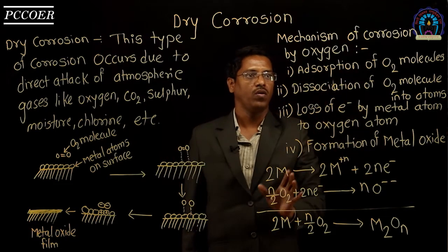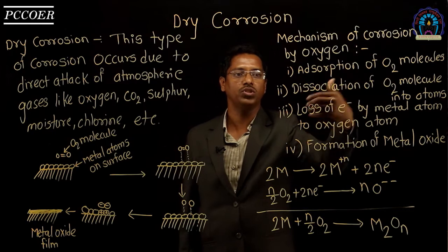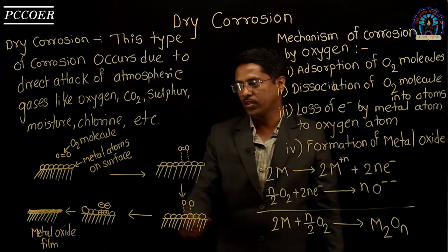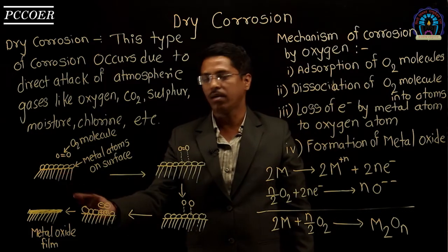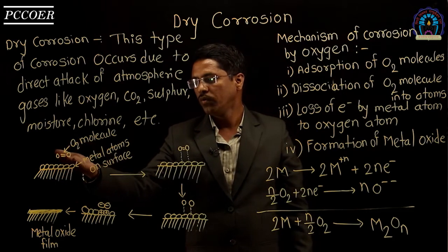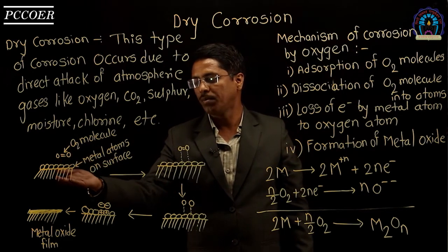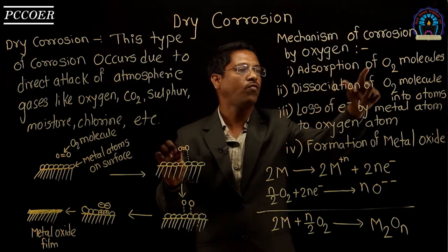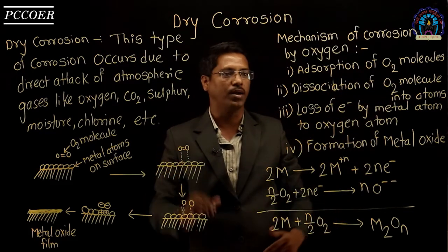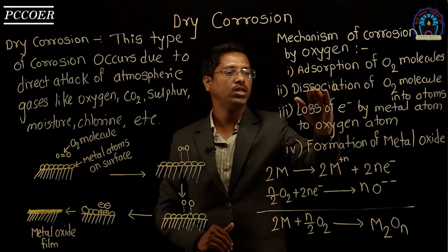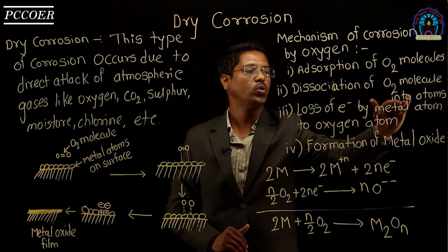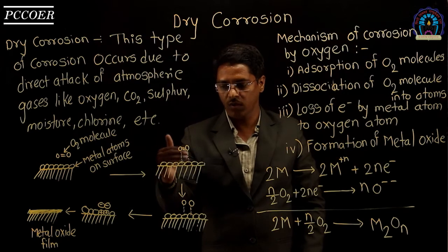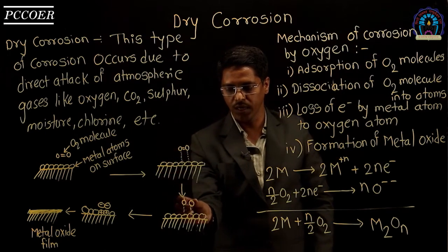There are four steps involved in the mechanism of corrosion by oxygen. The first step is the adsorption of the O₂ molecule on the surface of the metal. You can see in the diagram how the O₂ molecule comes in contact with the metal and gets adsorbed on its surface. The second step is the dissociation of the O₂ molecule into atoms — the adsorbed O₂ dissociates into oxygen atoms.